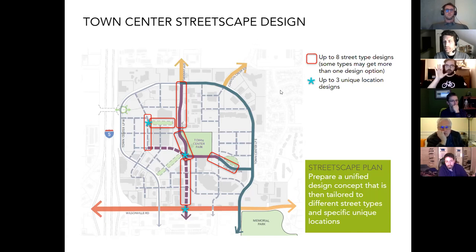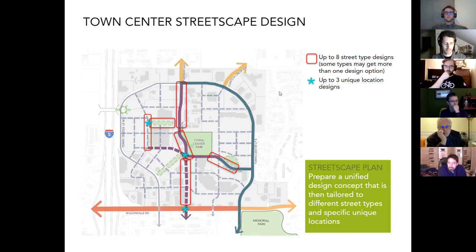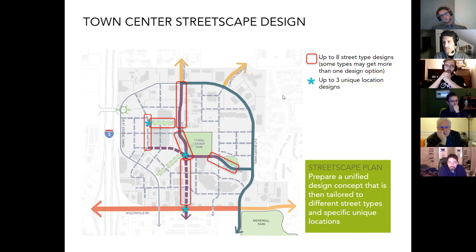Ben asked whether the signals would be like flashing lights similar to the ones in front of City Hall on Courtside and Town Center Loop East. The response: the signal at Rebecca would stop traffic, but they would all be synchronized so you wouldn't have stops happening out of sequence. Thank you.